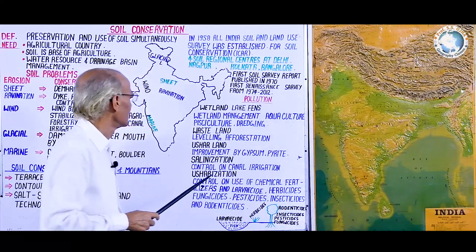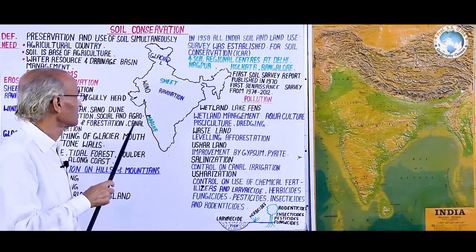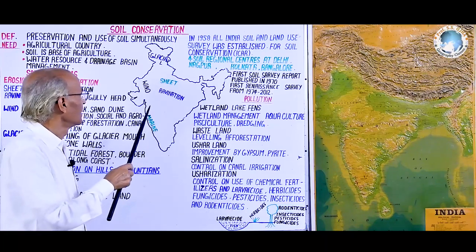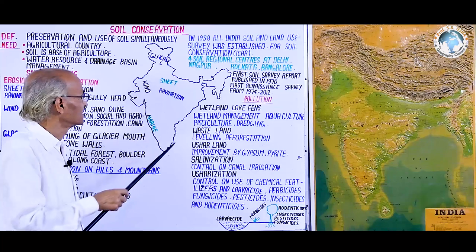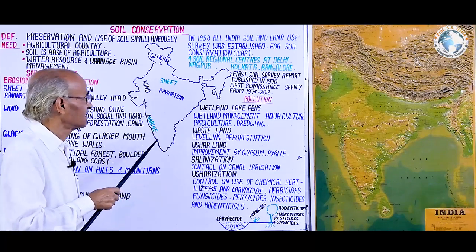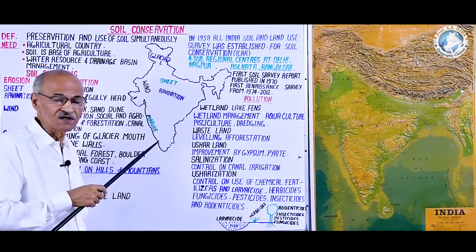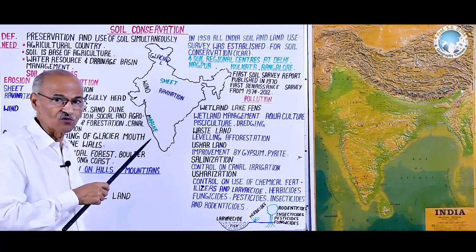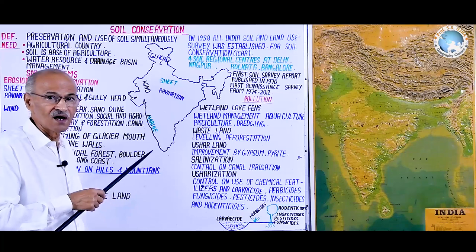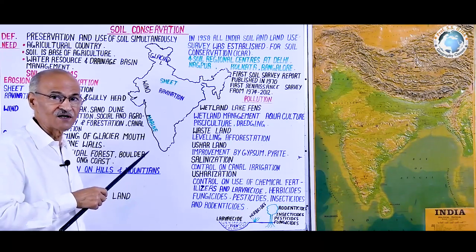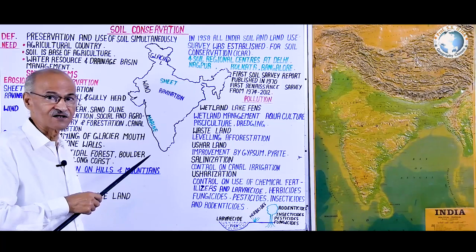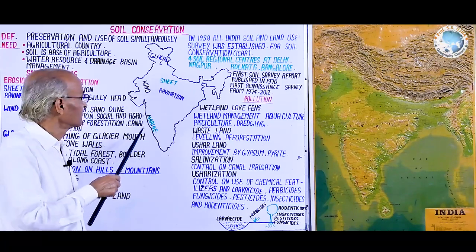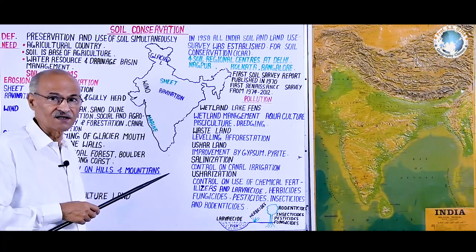This is about soil conservation in India and its regional distribution. These measures will help improve and conserve the soil, and will help in the betterment of agricultural productivity and soil fertility, making India agriculturally rich.